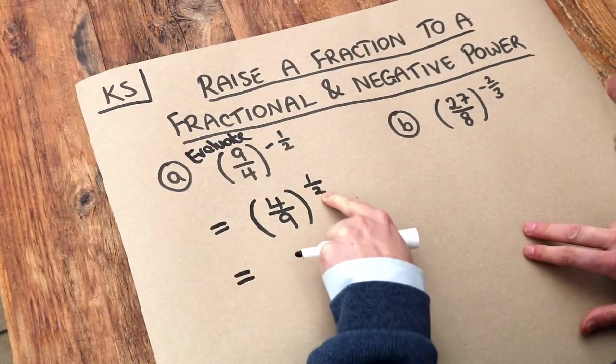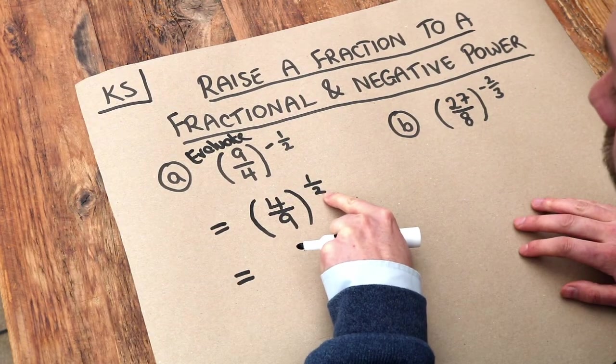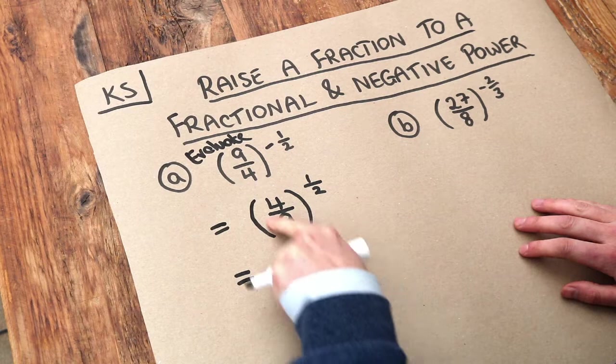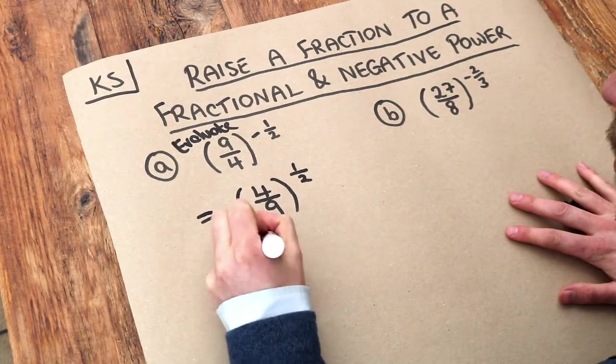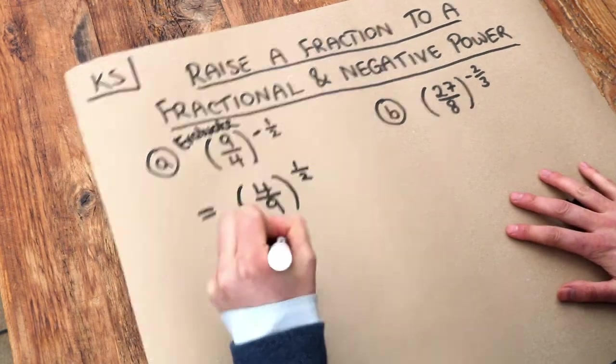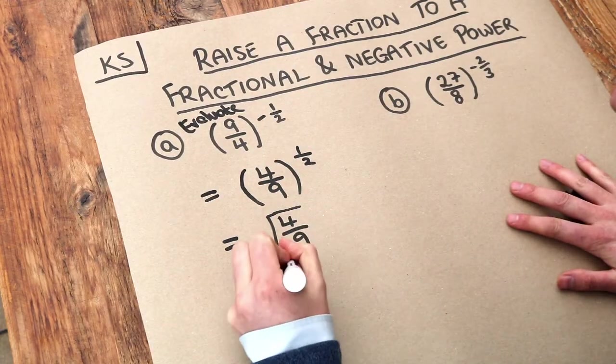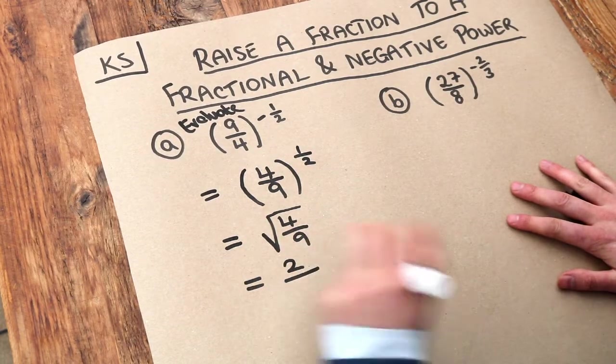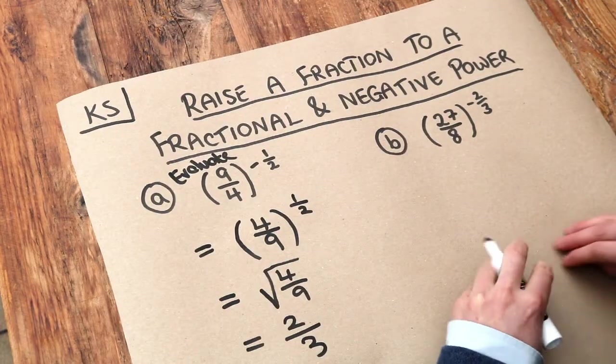And now we've got a power of a half. Now remember when we have a power of a half we square root this thing here. So we just do the square root of 4 over 9. And if you want to square root 4 over 9 we just square root the 4 which is 2, and we square root the 9 which is 3. And we've got our final answer.